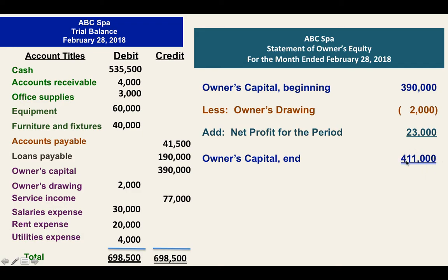This 411,000 will be presented in the preparation of your statement of financial position. If you will not prepare a statement of owner's equity, these accounts will be presented in your statement of financial position. But since we have prepared the statement of owner's equity, we will no longer detail those in the statement of financial position — we will just put the owner's capital end.